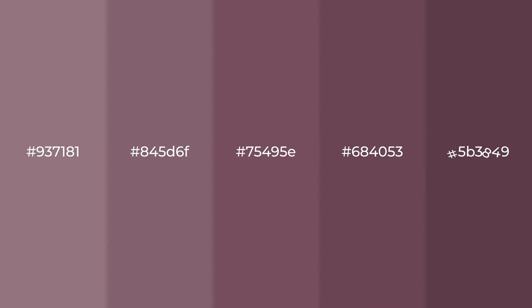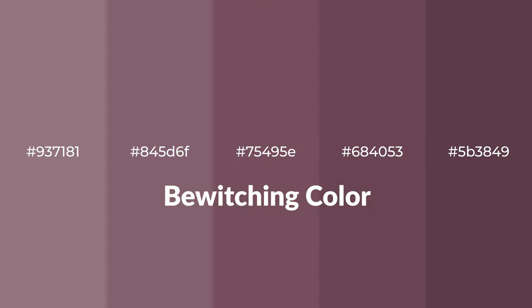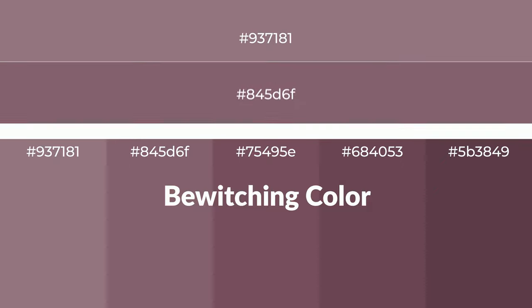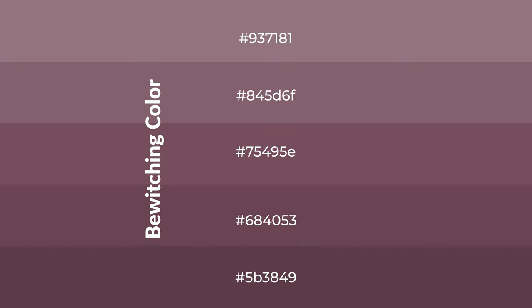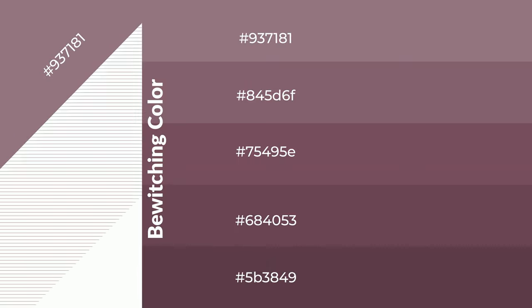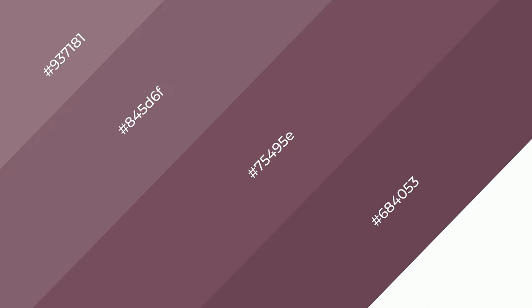Warm shades of bewitching color with violet hue for your next project. To generate tints of a color, we add white to the color. Tints create light and exquisite emotions. To generate shades of a color, we add black to the color, and it is used in patterns, 3D effects, and layers. Shades create depth and drama.